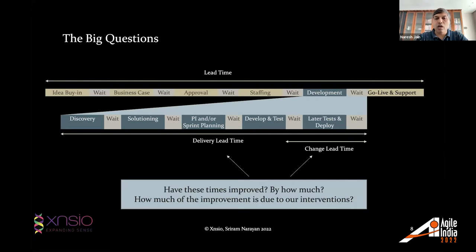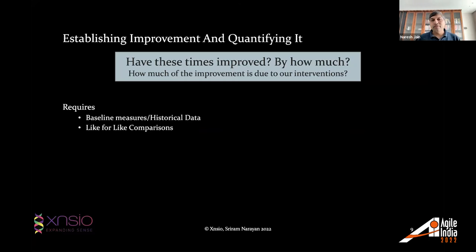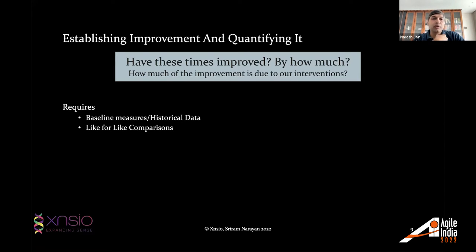The question we have is: have these times improved by our interventions? And if they have improved, can we quantify by how much? That's the kind of question we want to answer and be able to answer to the CXO, so they understand that the investment they're making in transformation actually gives a reasonable ROI. To answer this question, we have two prerequisites. First, we need to establish a baseline or some historical data against which we can compare and say whether things have improved, and by how much. Second, we need to do a like-for-like comparison.